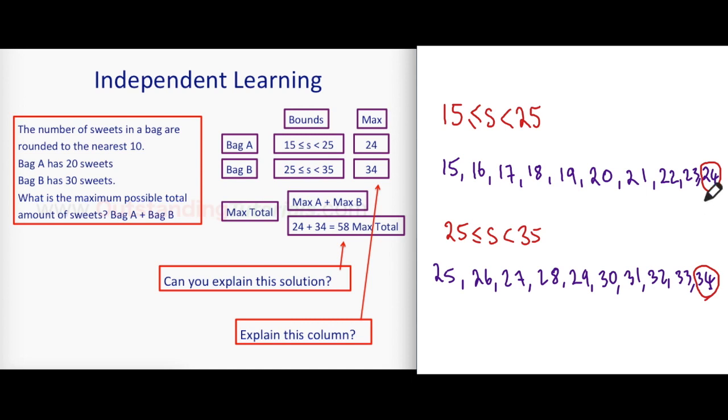Why does it not make any sense to have 24.5? Why does that not make any sense? Because what are we dealing with here? We're dealing with sweets. You can't have 24.5 sweets, it just doesn't make any sense. The decimals and 19.5, none of these make sense because we're dealing with actual sweets.